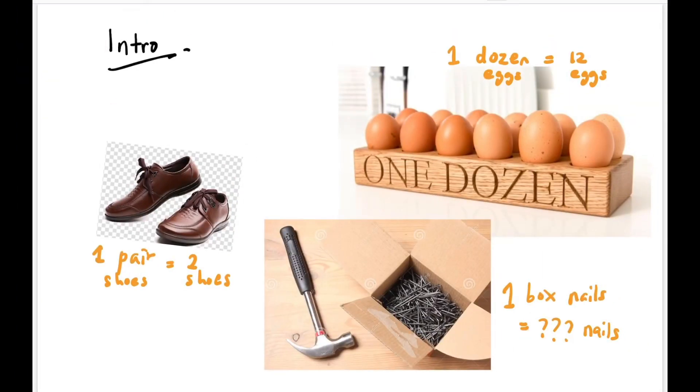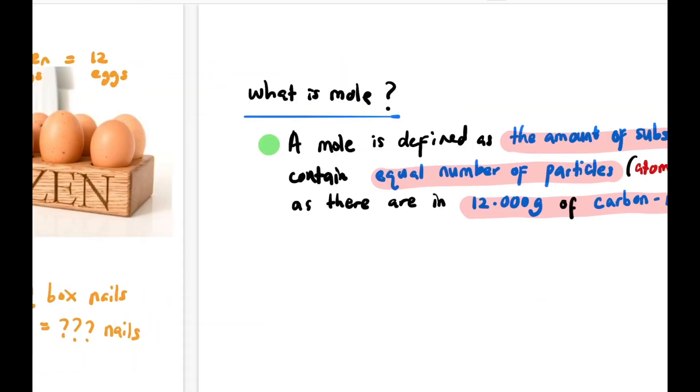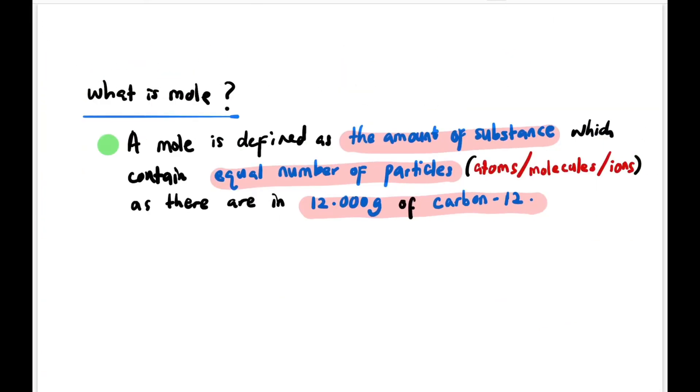Let's do some introduction. If I say a pair of shoes, that means two shoes, isn't it? And if I say one dozen of eggs, that means I have 12 eggs. If I have one box of nails, that means I have lots and lots of nails.